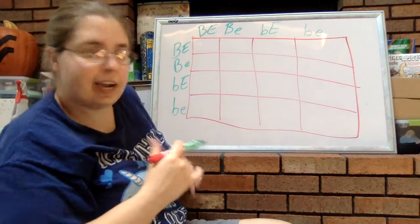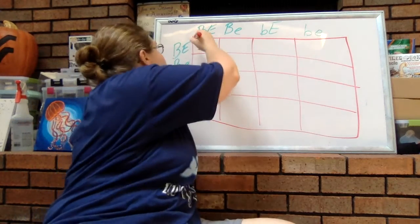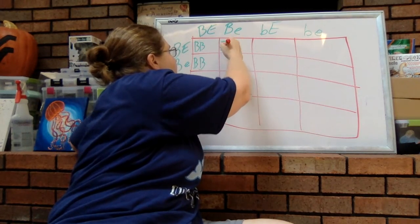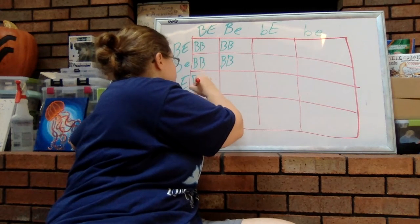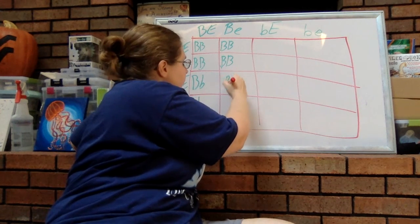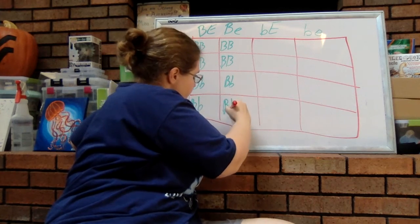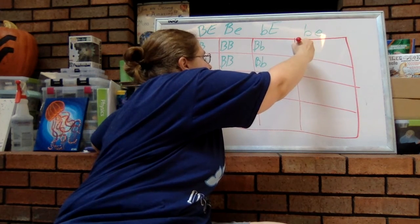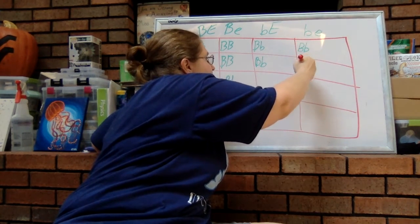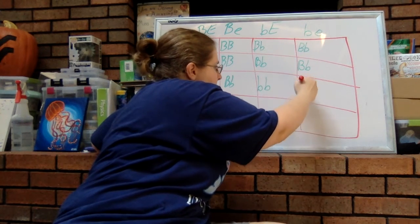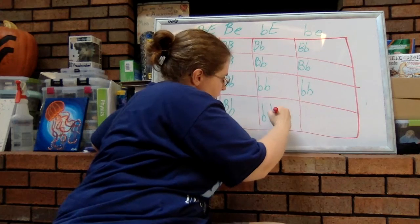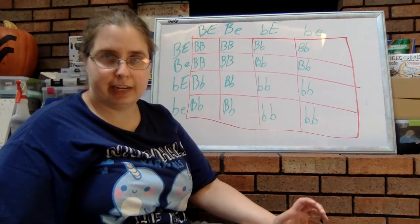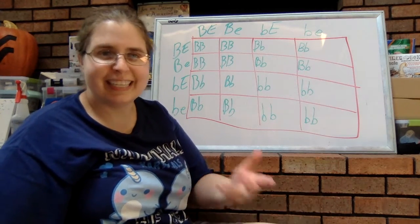All right, I like starting out with one letter at a time, so I'm going to go through and do the B's first. All right, so I got all the B's distributed and put together. Now I'm going to go back and do the second gene, the E gene.